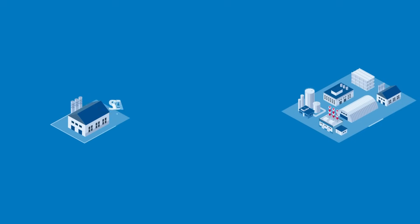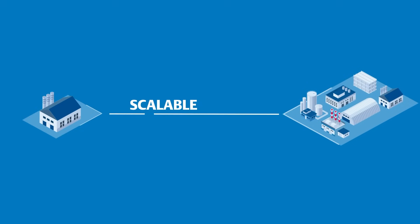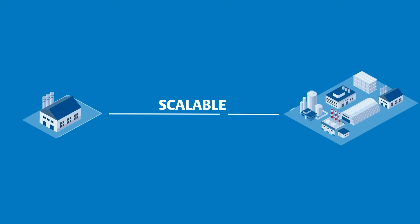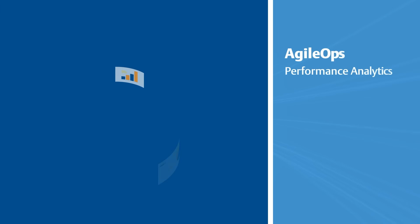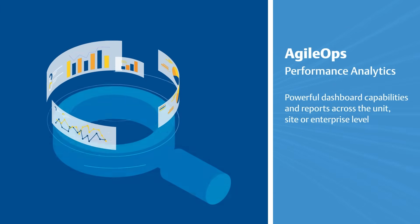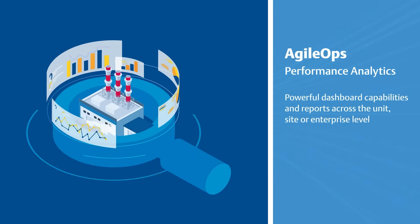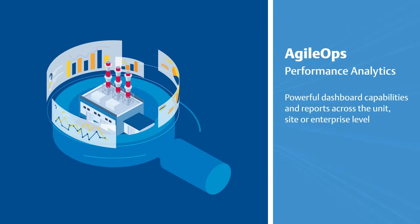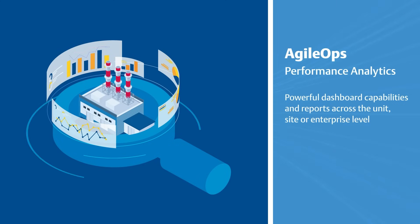Our software is scalable to meet the functionality requirements of any size operation, with six key features, including AgileOps Performance Analytics — detecting an unsafe or inefficient operation by monitoring alarm and event metrics and tracking key performance indicators.